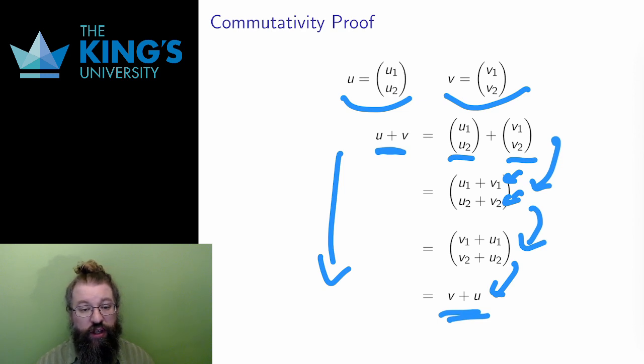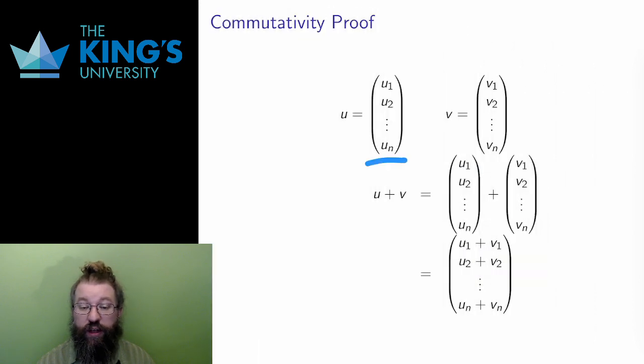I've started with u plus v, and ended with v plus u in a valid string of equalities. Notice in this proof I never started with the equation u plus v equals v plus u. I must be careful with the structure of my proof. I can't assume what I want to be the conclusion. I could do this equally well for vectors in Rn, with arbitrary length instead of just vectors of length 2, and the steps are exactly the same.